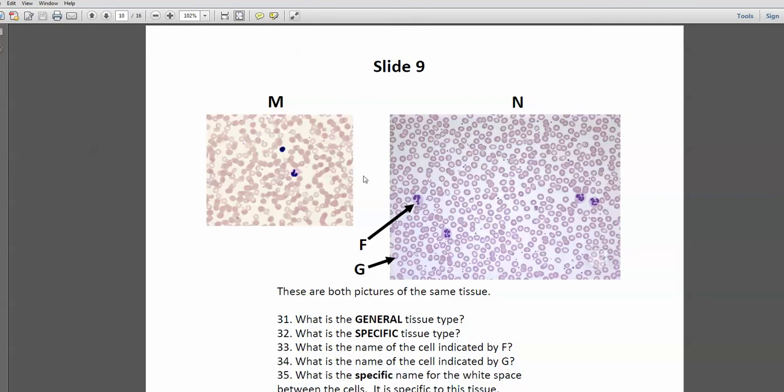No free spaces, it's not nervous. No striations, it's not muscular. So it must be connective, and indeed it is. We have lots of these little small cells and a few big cells with these lobed nuclei. So obviously this is blood. So the general tissue type is connective, specific blood.